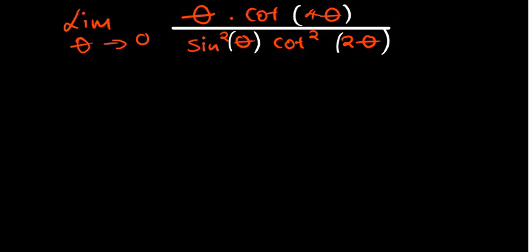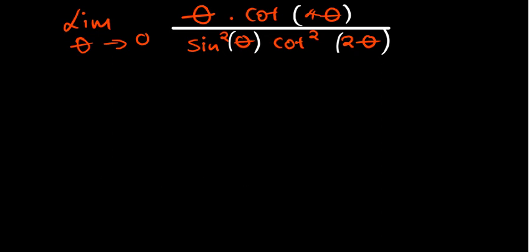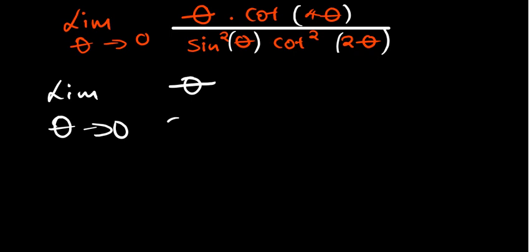In this tutorial we're going to review a question on limits. We need to substitute and simplify the complex part. Cot is basically 1 over tan theta. So we're going to have the limit as theta approaches 0, and for the first part we have theta over 8 over sine squared theta.